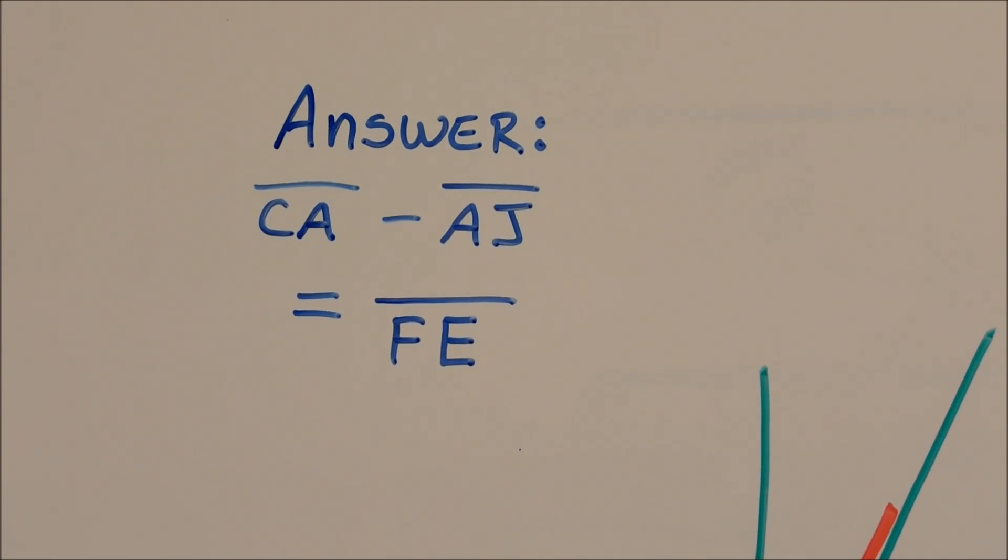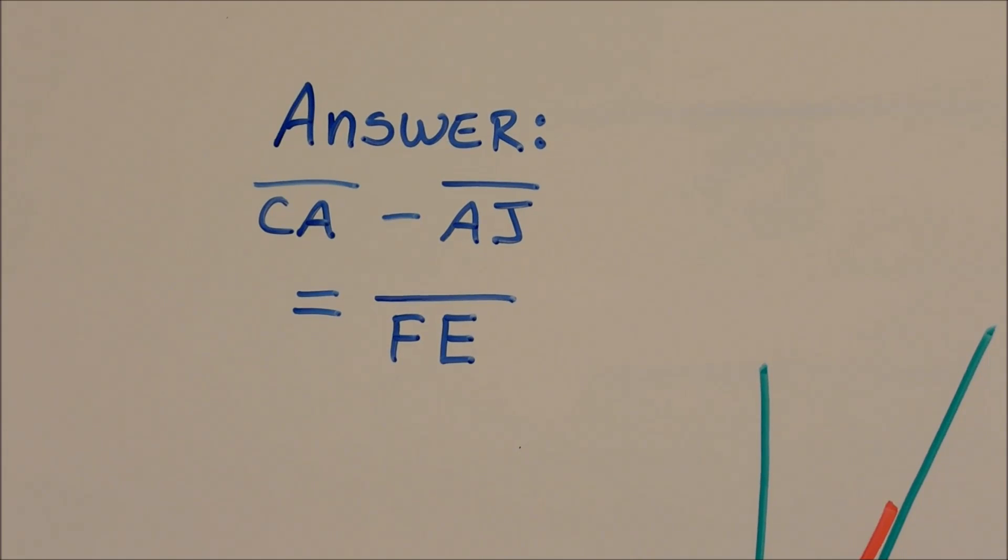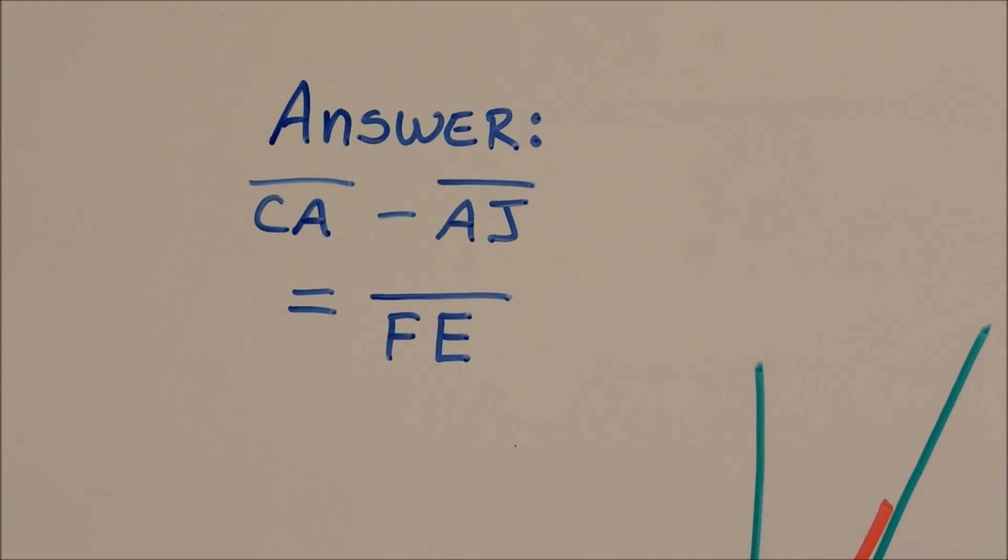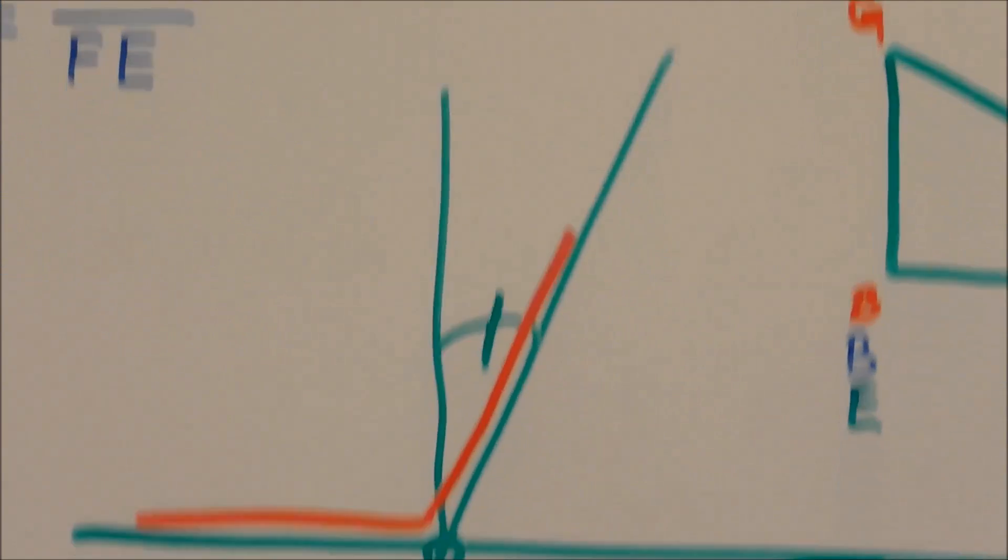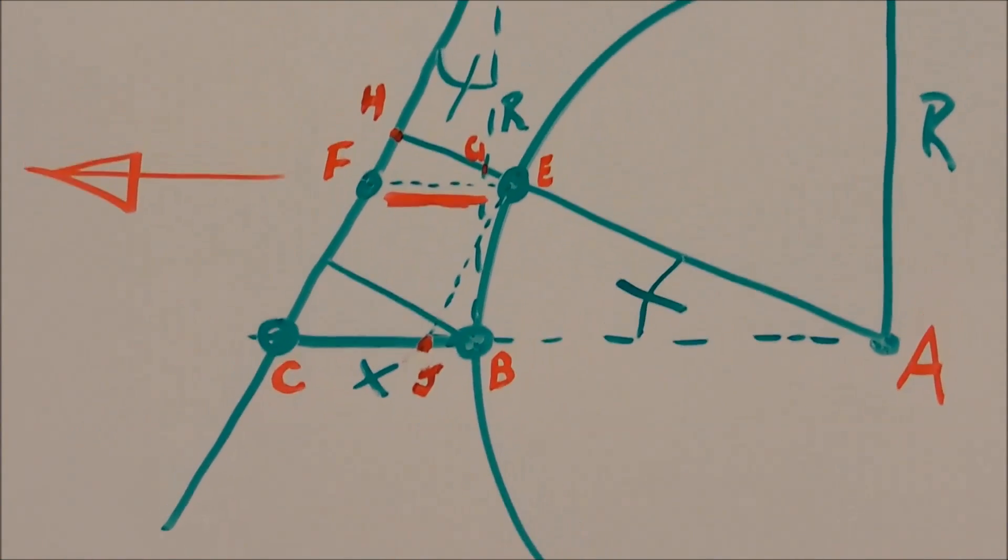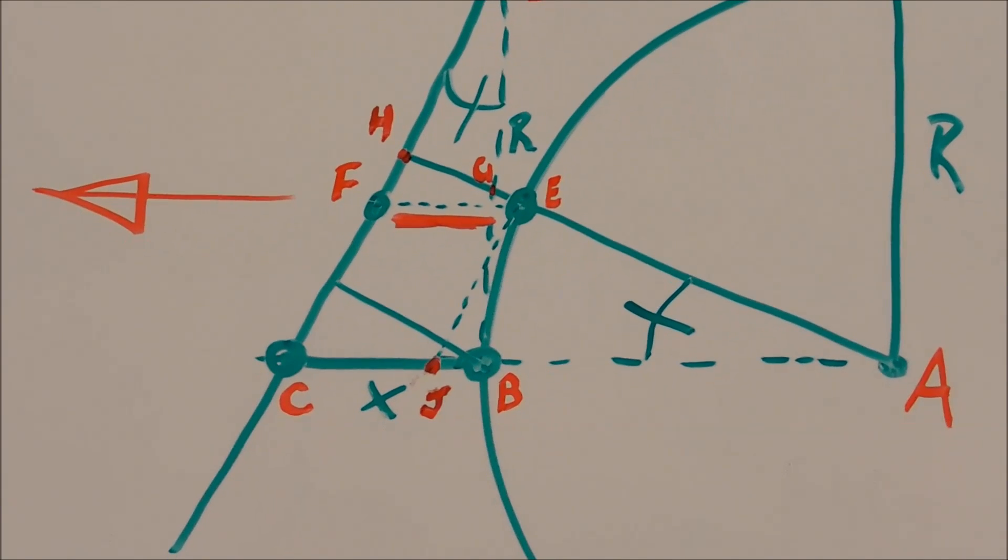If you can take line segment CA and subtract line segment AJ, it will give you the shift that you're looking for, the little line segment FE. Let's get back here and zoom in on that. Now, how do I know this?